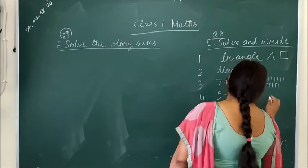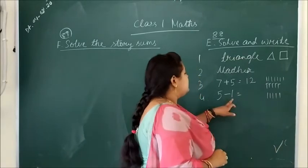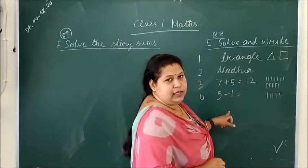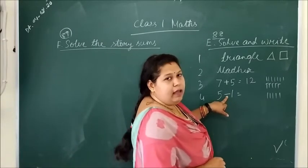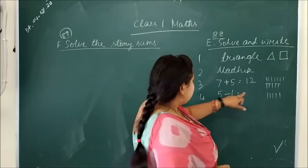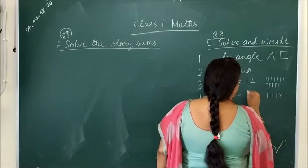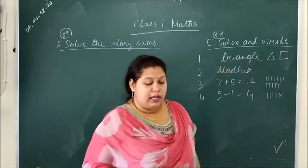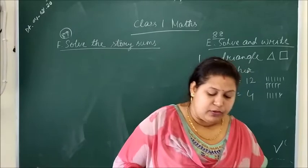So what does one less mean? 1, 2, 3, 4, 5. Amman ate 5 sandwiches. One sandwich is less than Amman. What does one less mean? Subtraction. Subtraction sign is minus. So here we cut one sandwich. So how many remain? 1, 2, 3, 4. 4 sandwiches remain. This means Jack ate four sandwiches.